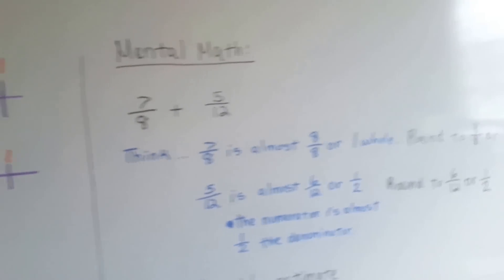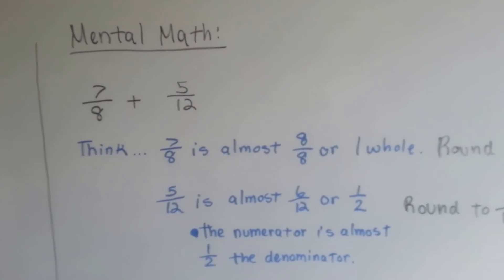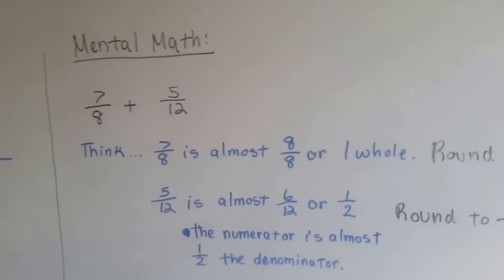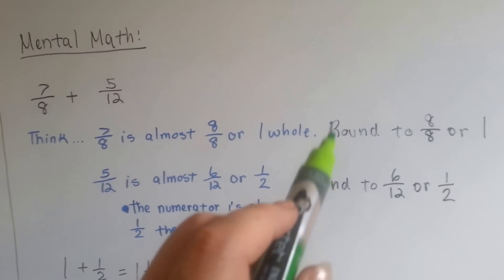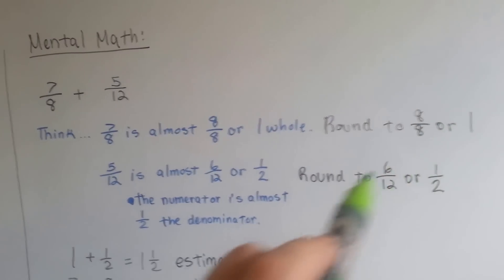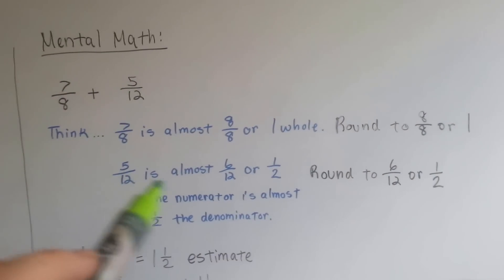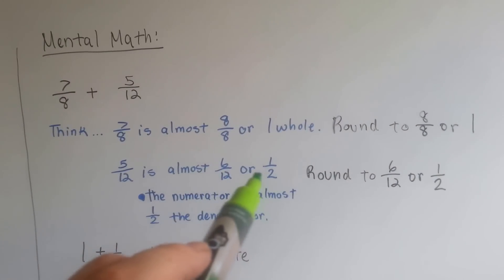If we want to use mental math and we have 7 eighths plus 5 twelfths, we think to ourselves 7 eighths is almost 8 eighths, or one whole, so we can round it to one whole. The 5 twelfths is almost 6 twelfths, or a half.